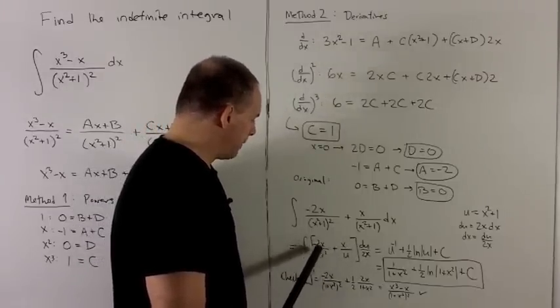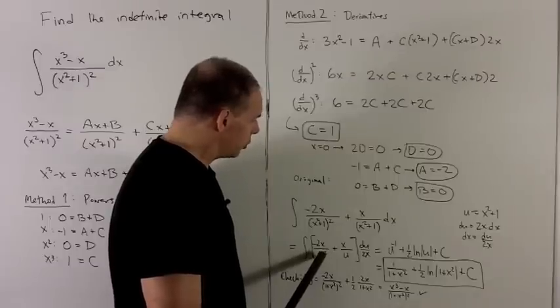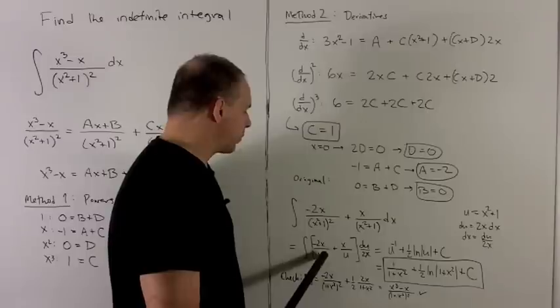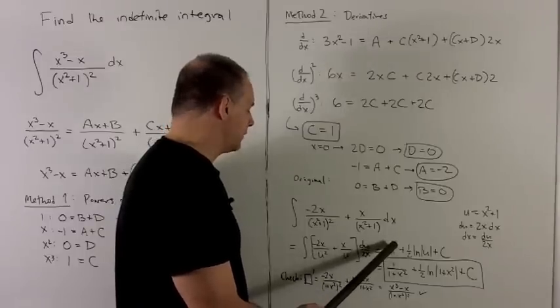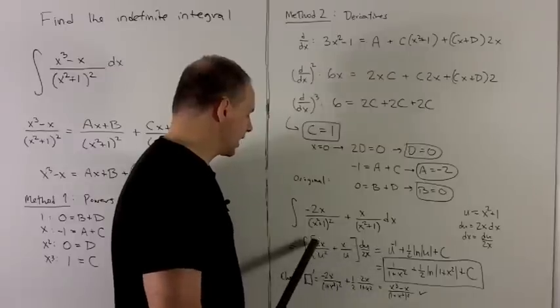So I'm going to have minus u to the minus 2. So to take the antiderivative of that, we're going to add 1 and flip it over. Adding 1 gives me u to the minus 1. Flipping that minus 1 over gives me a minus, which cancels that minus.